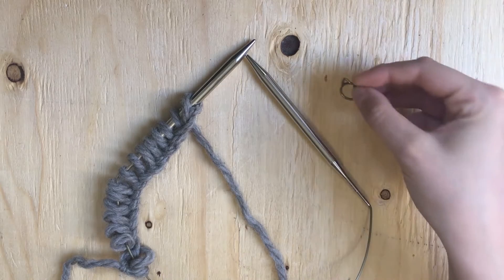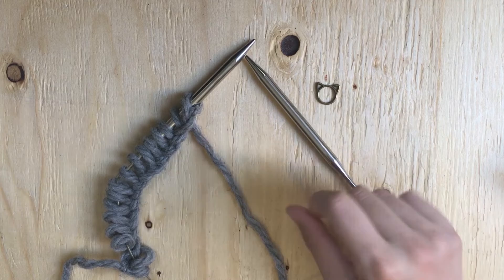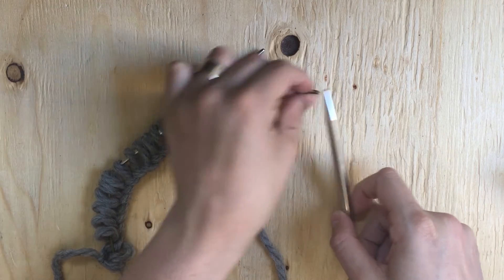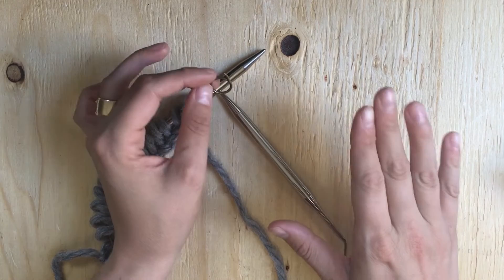A stitch marker can be anything really. Usually it's something circular as long as it's big enough to fit on your needle. It doesn't have to be exact, it can be a little bit bigger.